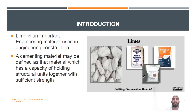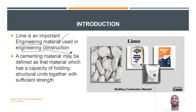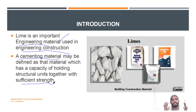Lime is available in markets in different forms. It is an important engineering material used in engineering construction. If you want to whitewash your walls, you will need to buy some lime. In ancient times, it was used as a cementic material before the invention of cement. It may be defined as the material which has the capacity of holding structural units together with sufficient strength. In order to hold two stones together, we can use lime.